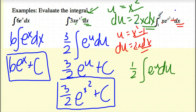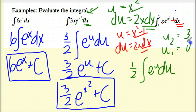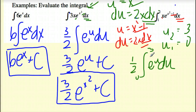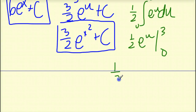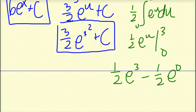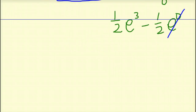Since I have limits, I have to change my u's. So u₂ is equal to 2 squared minus 1, which is 4 minus 1, which is 3. u₁ is equal to 1 squared minus 1, which is 0. So my new limits are 0 and 3. Solving this, I get one half e to the u evaluated from 0 to 3. No need for c. I get one half e to the third minus one half e to the 0. Since e to the 0 is 1, I combine my denominators and get e to the third minus 1, all over 2.